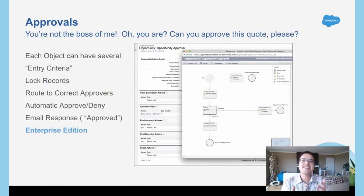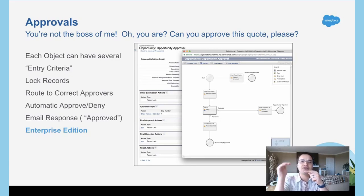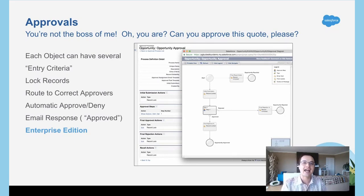Approvals are great for things like a quote — before you're allowed to put it in a stage where you can send it to customers, let's make sure it's approved. You can set up approval processes in Salesforce that lock the record, prevent further changes, and route it from me to Michelle, then to the VP, then to the senior VP. People can even approve or deny in the mobile app or via email — you could get an approval request right now, reply 'approve,' and the process continues.